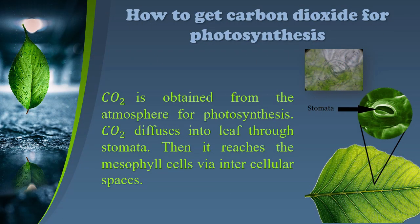How to get carbon dioxide for photosynthesis. Carbon dioxide is obtained from the atmosphere for photosynthesis. Carbon dioxide diffuses into the leaf through stomata, then it reaches the mesophyll cells via intercellular spaces.